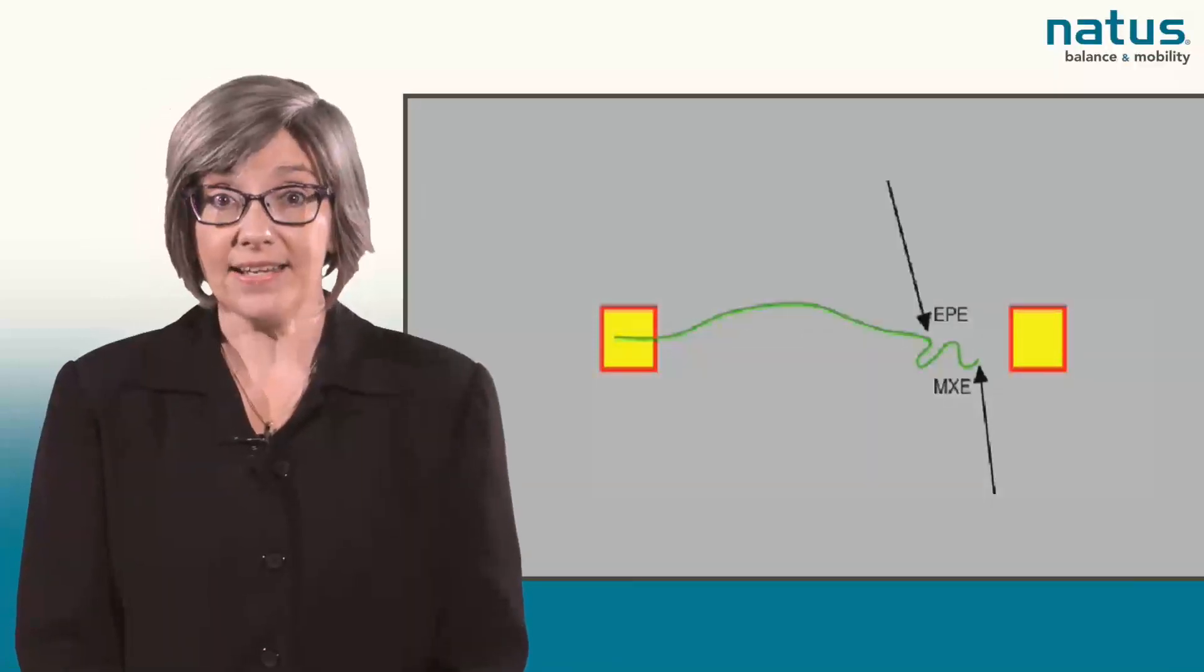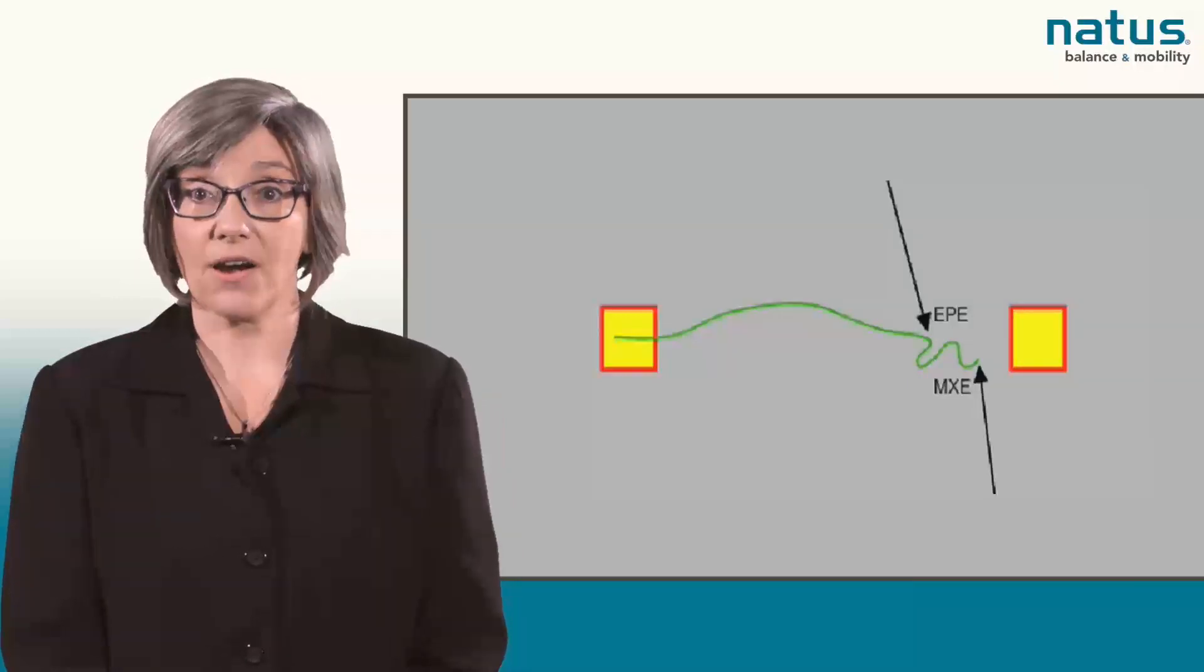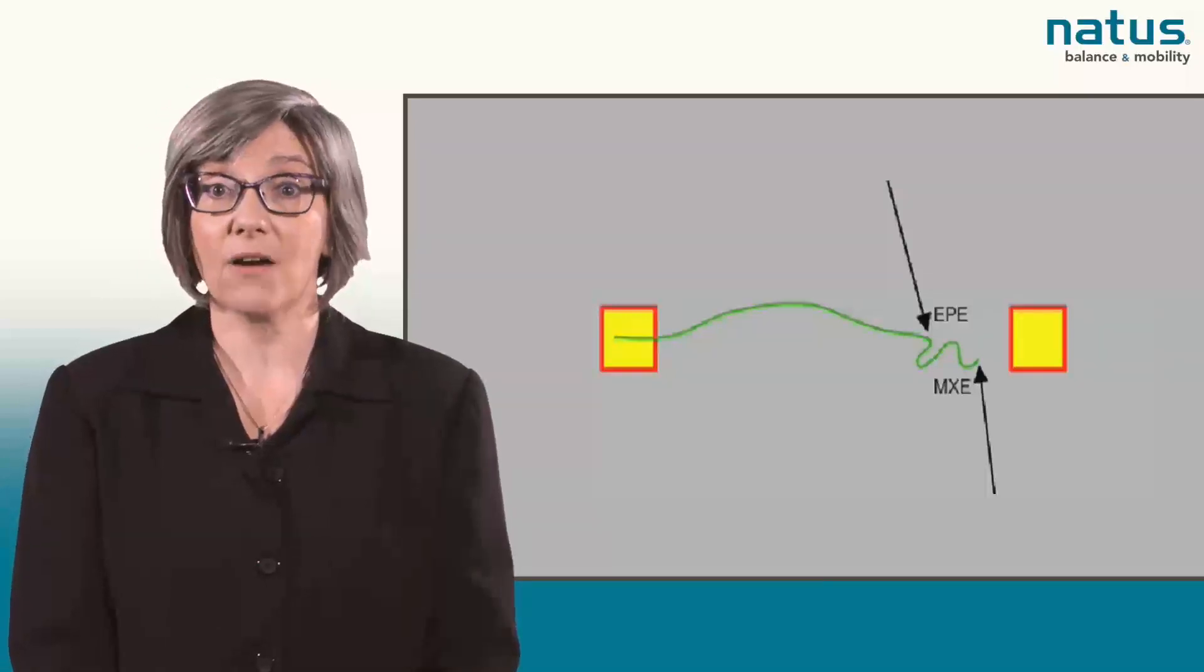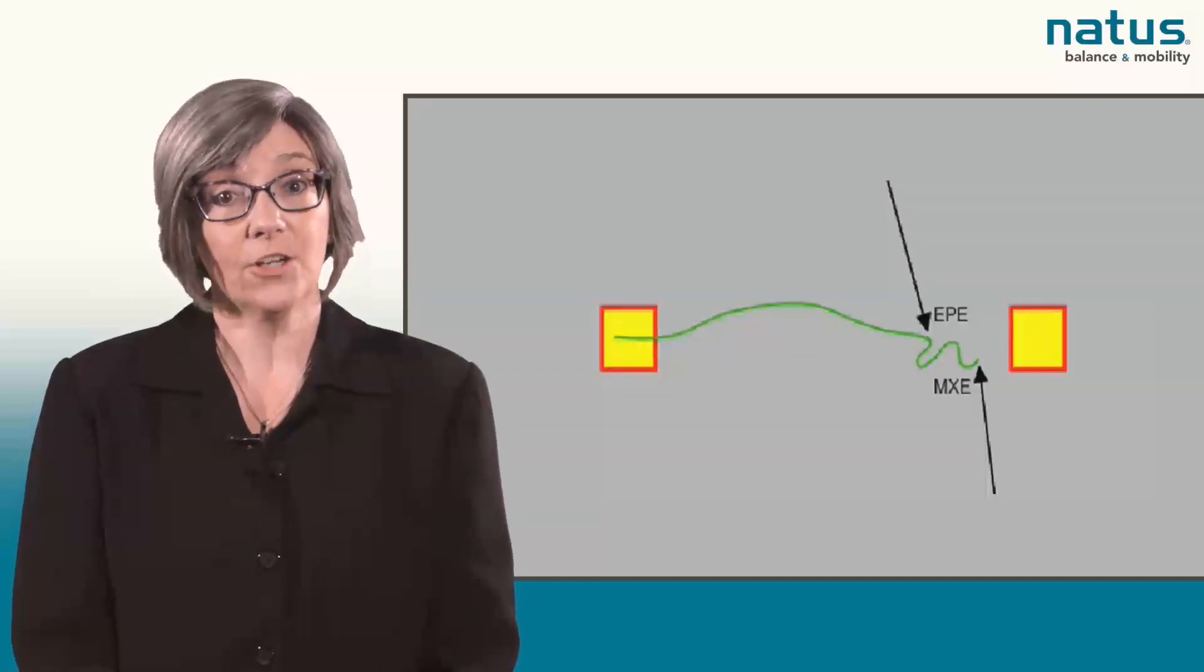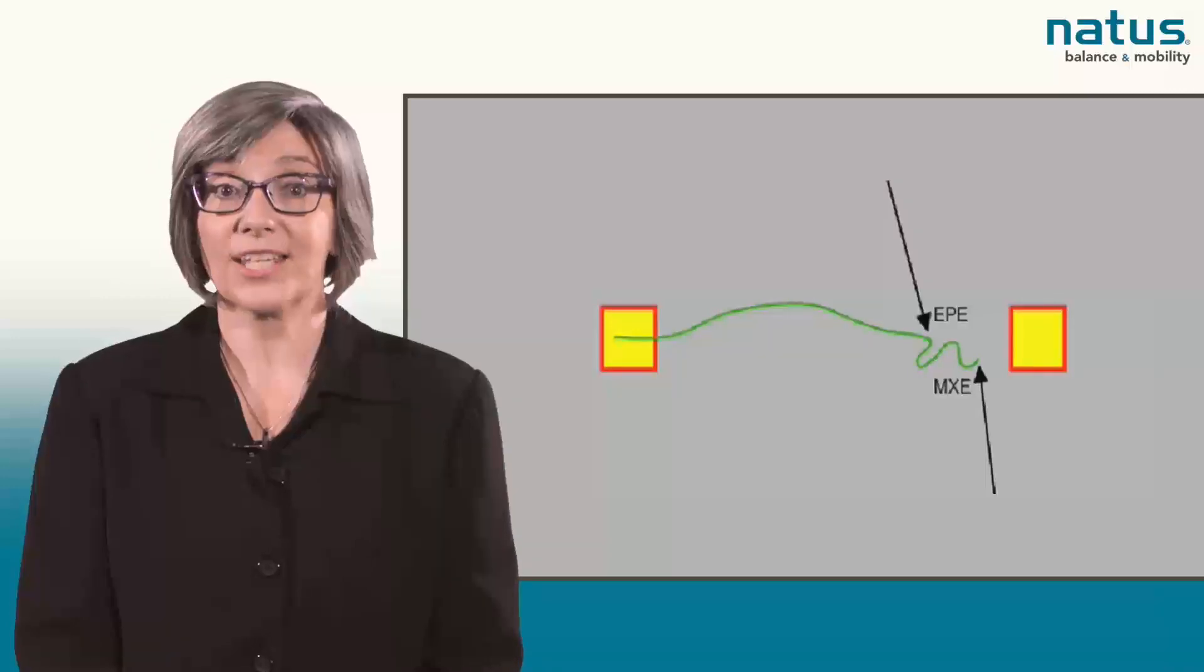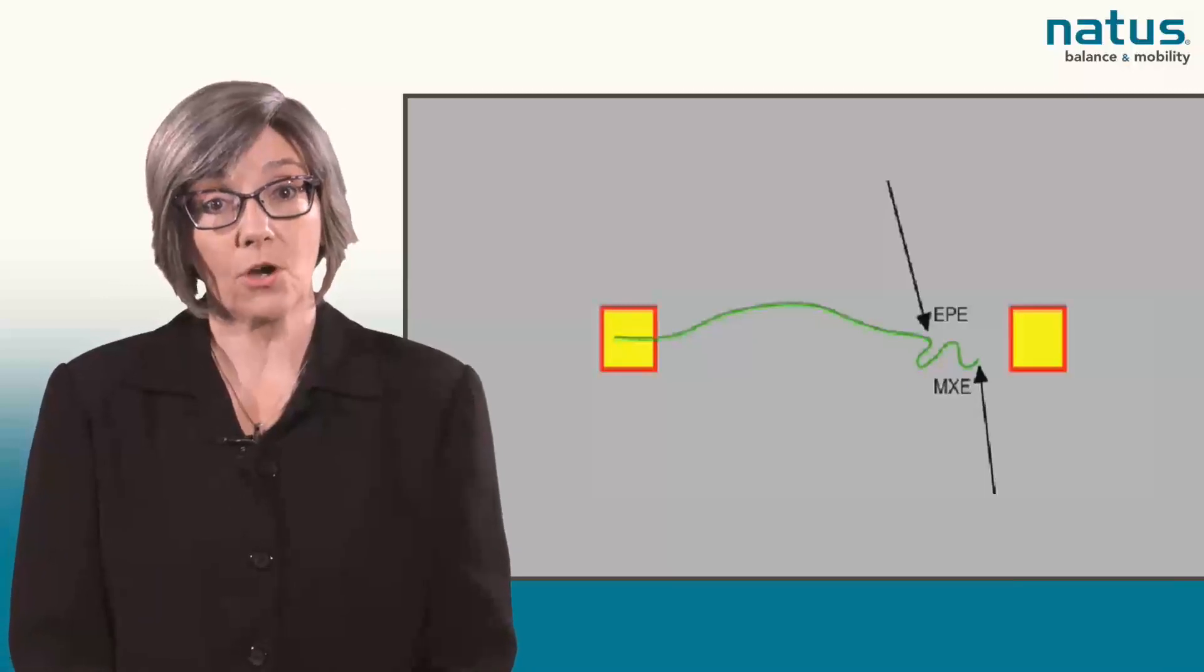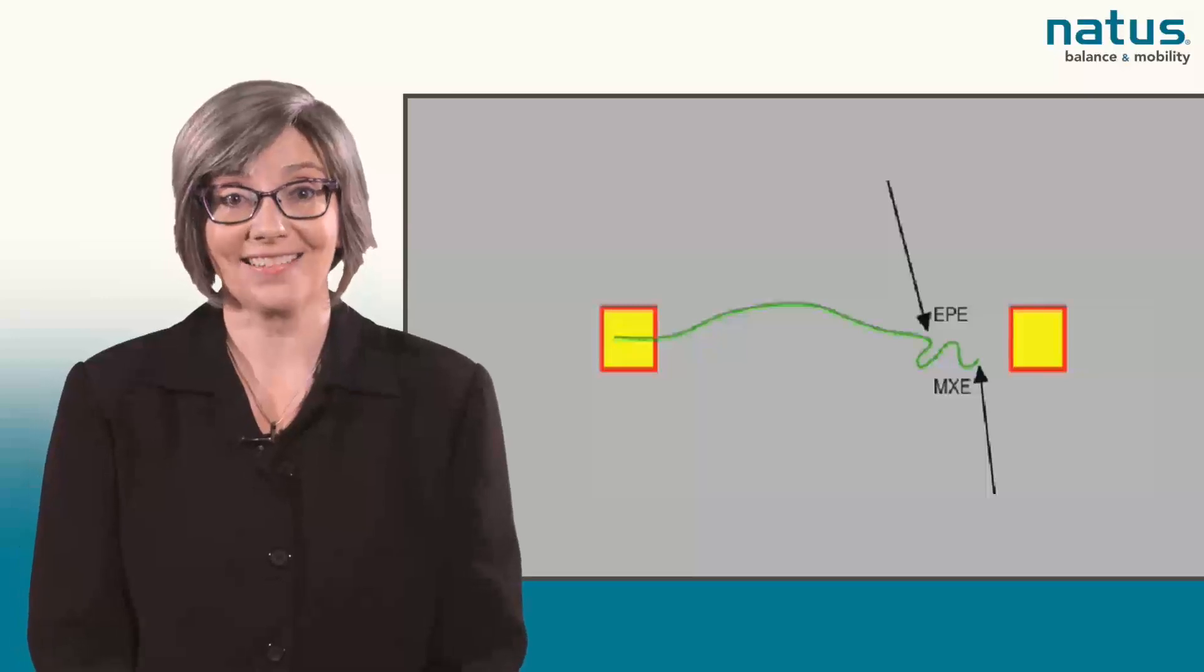The EPE, or endpoint excursion values, tell us how far an individual can shift or lean their center of gravity toward the theoretical limit of 100% in each of the eight movement directions. They're trying to do this without loss of balance, falling, or taking a recovery step. The endpoint excursion is a measure of the actual cone of stability, or movement limit, achieved by the patient during the task.